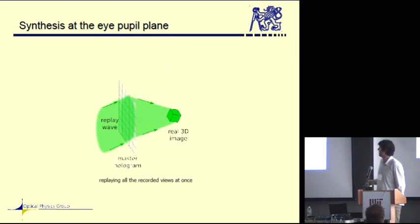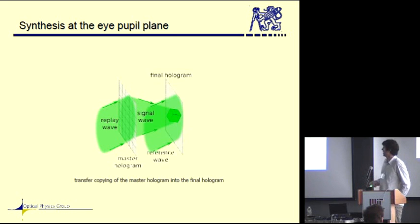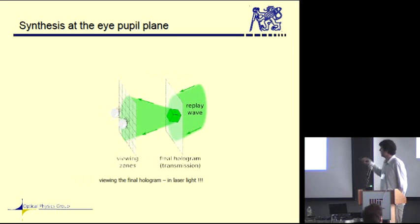Then you develop it, you replay it, and all the 2D images from the diffuser appear in the place where they were during the recording, and they form a three-dimensional image, which you can record using a standard transfer scheme. And then after developing, you can see that three-dimensional image.